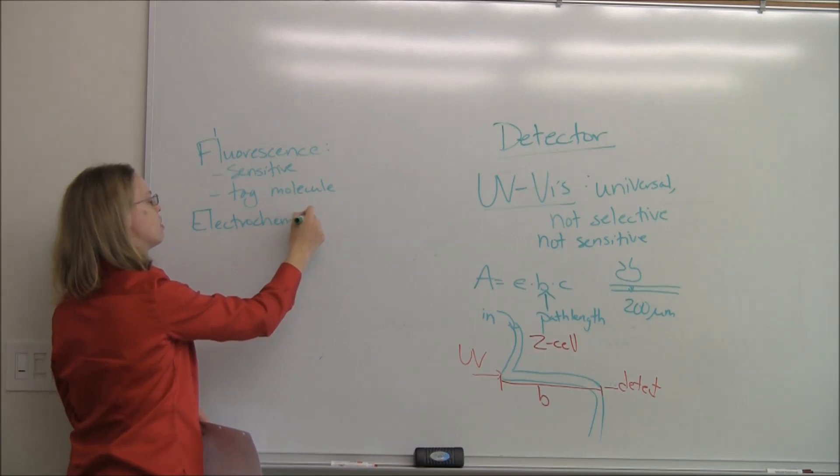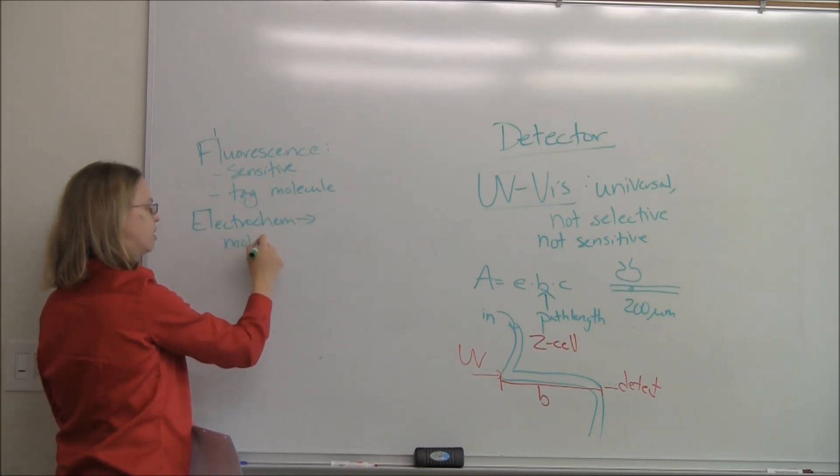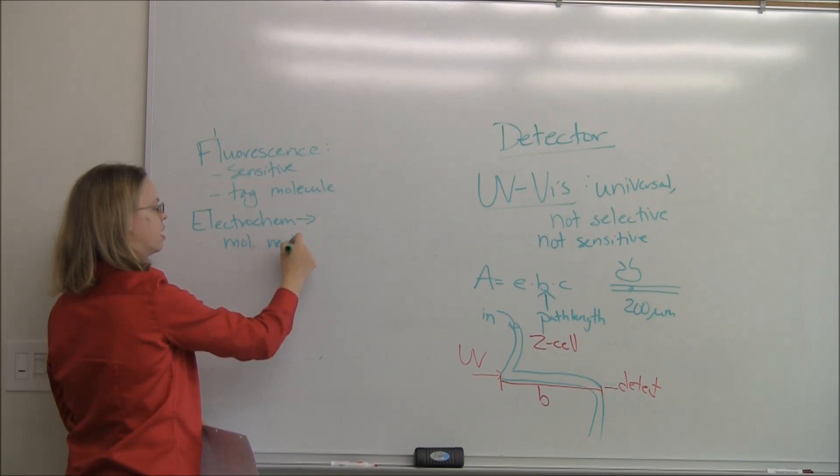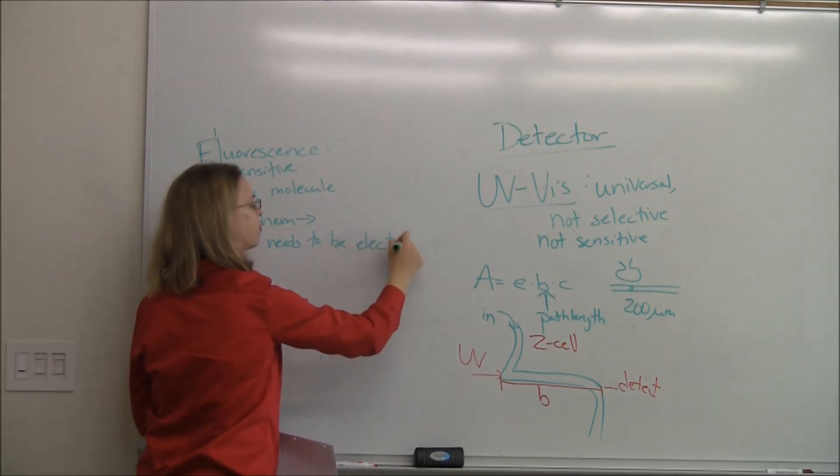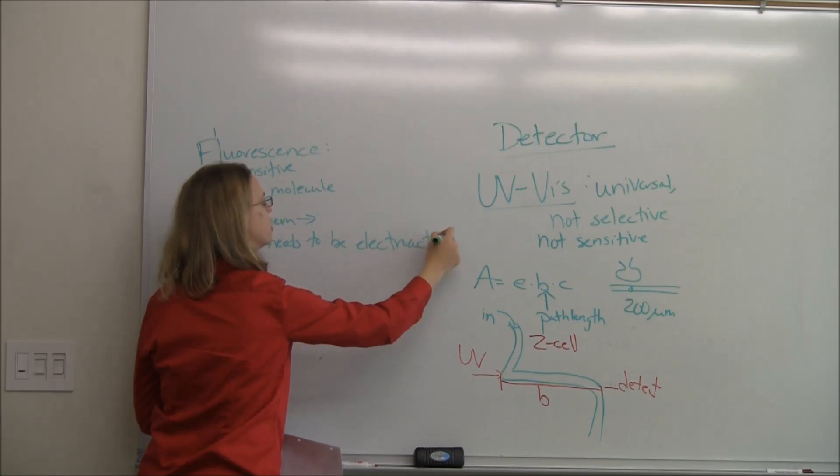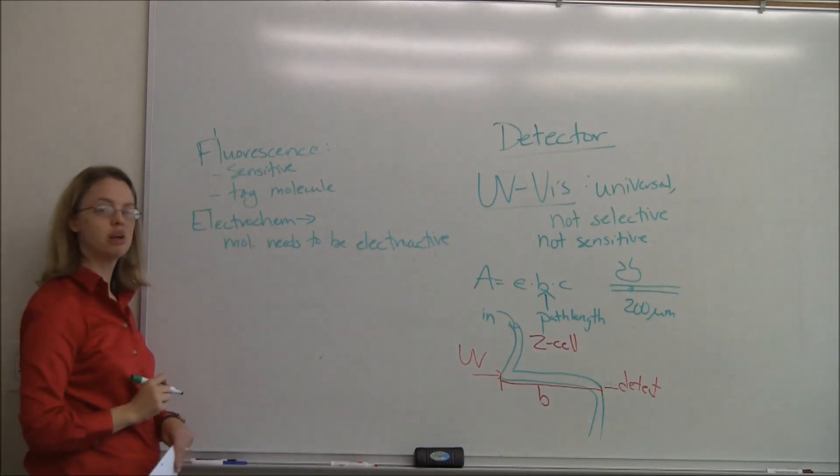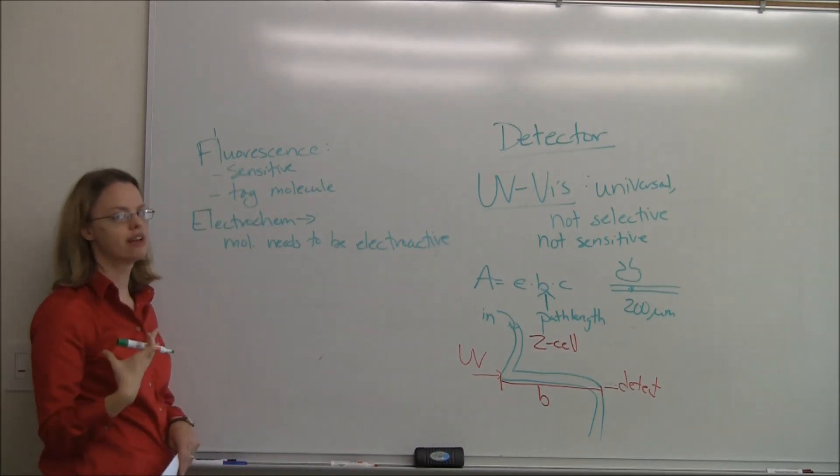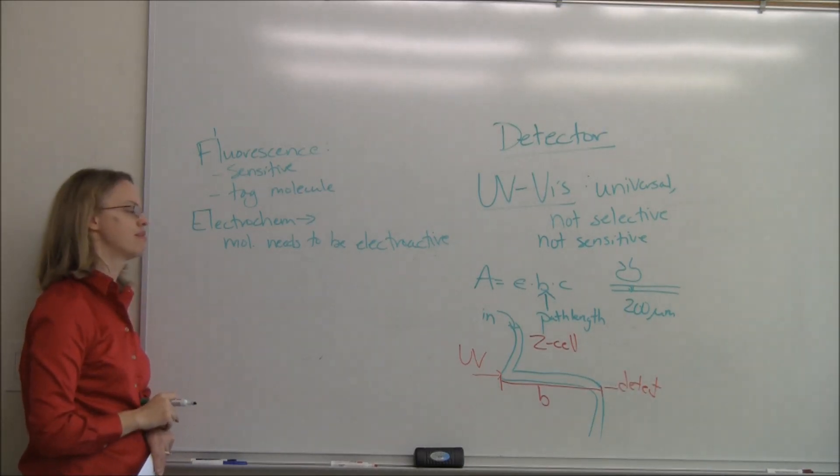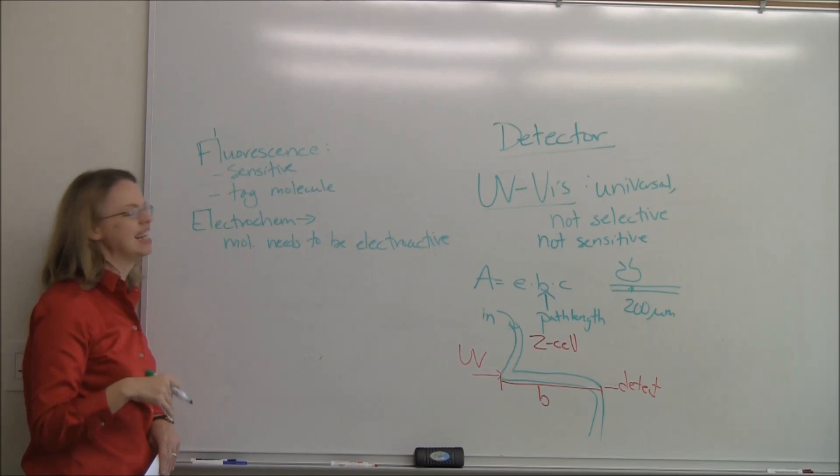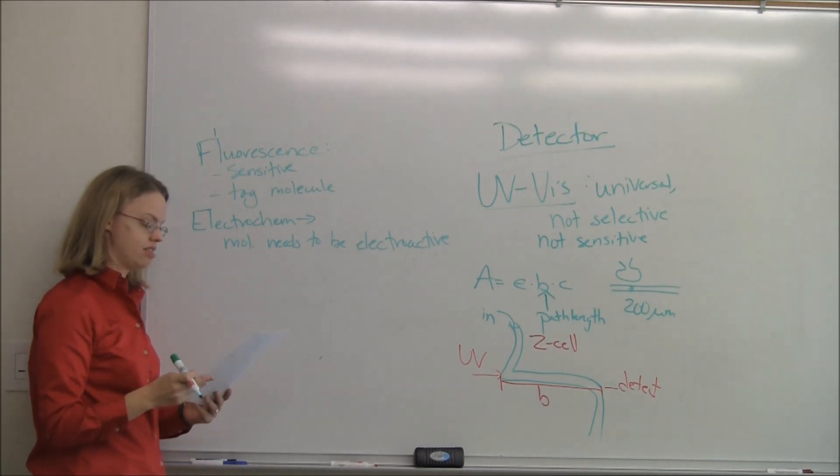You could do electrochemistry. Your molecule needs to be electroactive. And so that is somewhat limiting. You get the right set of molecules you want to look at. Like, I like to look at neurotransmitters. They're all electroactive, so they're really good for this. We do a lot of HPLC with electrochemistry detection in my field.